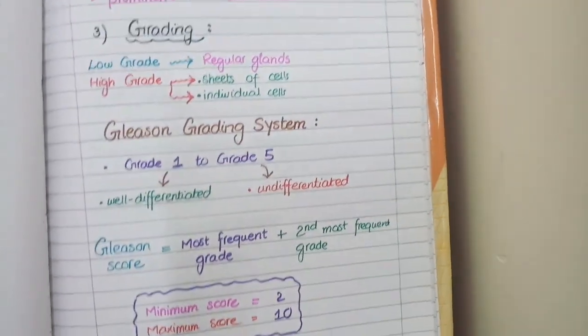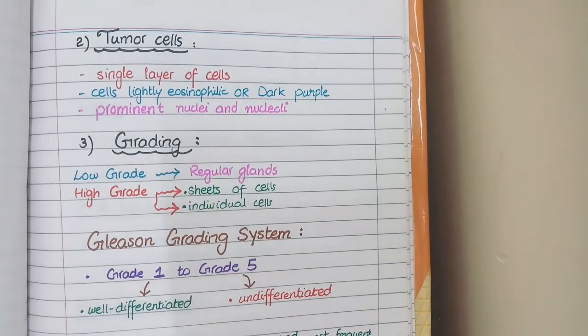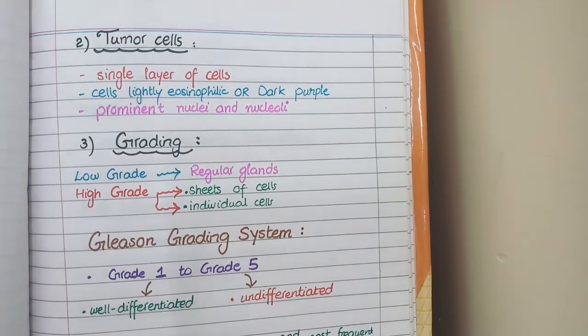Secondly, you see the tumor cells are arranged in a single lining instead of two-layered epithelium. And the cells are lightly eosinophilic or dark purple with prominent nuclei and nucleoli.